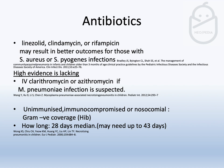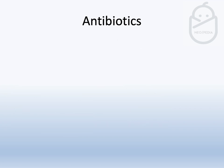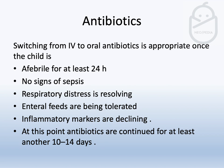In unimmunized or immunocompromised children, gram-negative coverage is needed — mainly Haemophilus influenzae type B — and antibiotic treatment may last up to 43 days. Switching from IV to oral antibiotics can be considered when the child becomes afebrile, shows no signs of sepsis, respiratory distress is resolving, enteral feeds are tolerated, and inflammatory markers are declining. At that point, antibiotics may need to continue for another 10 days to two weeks.